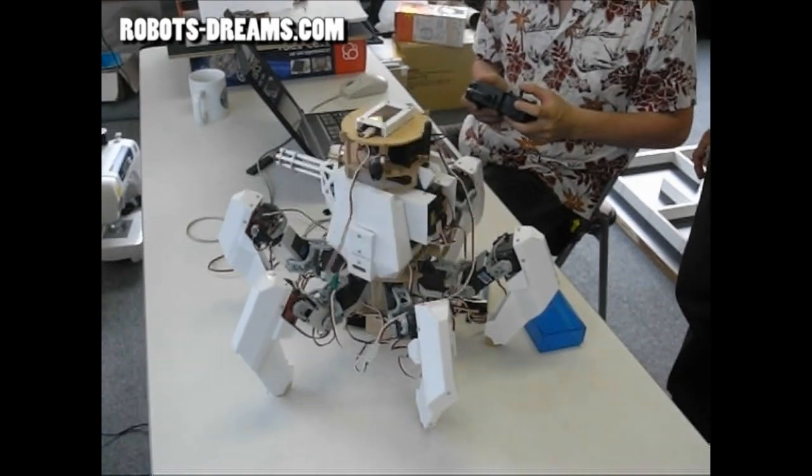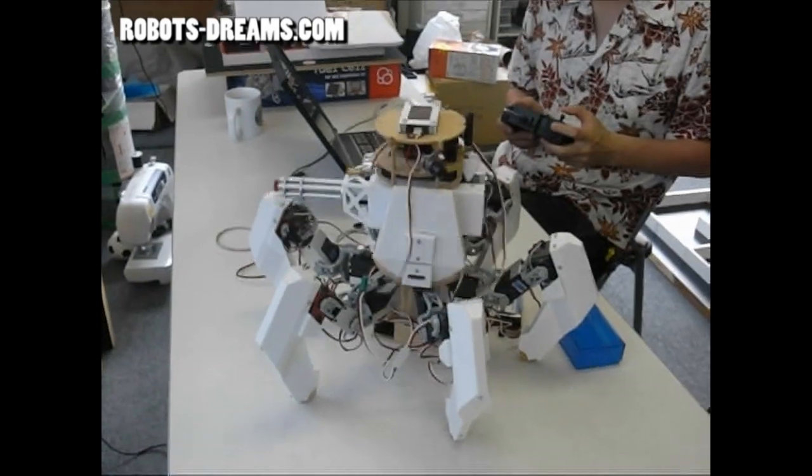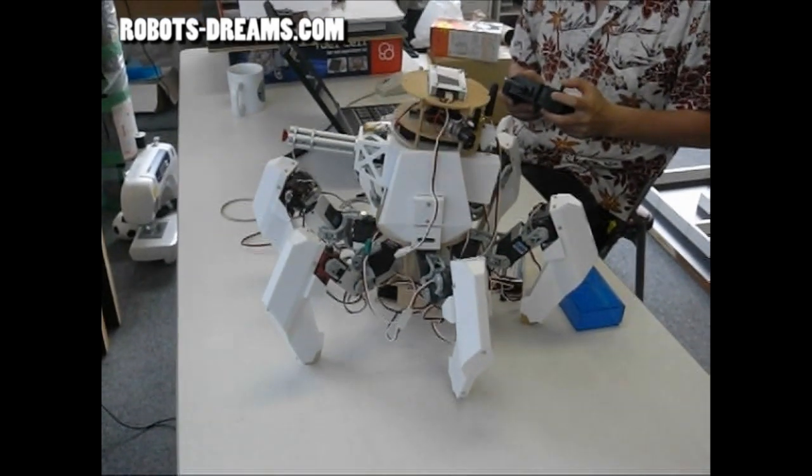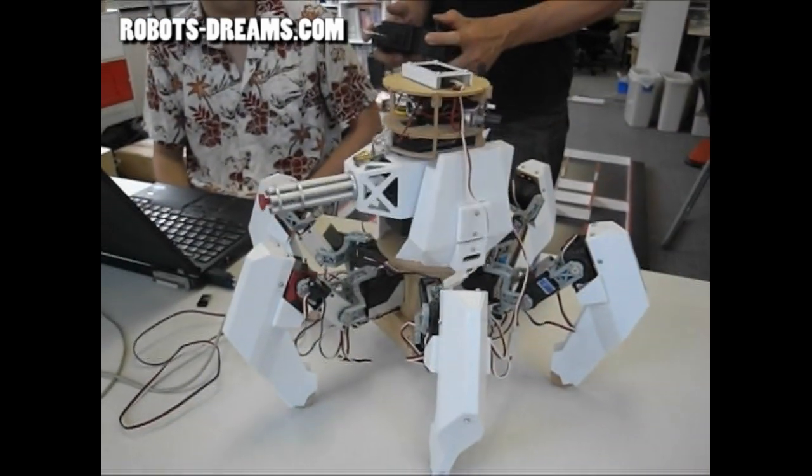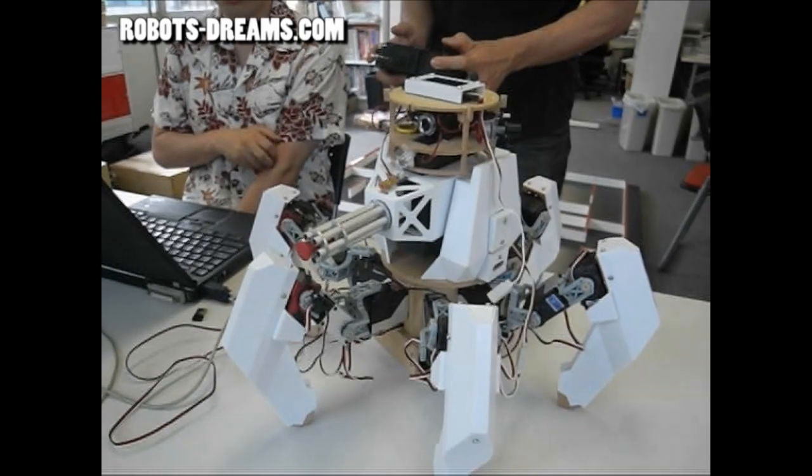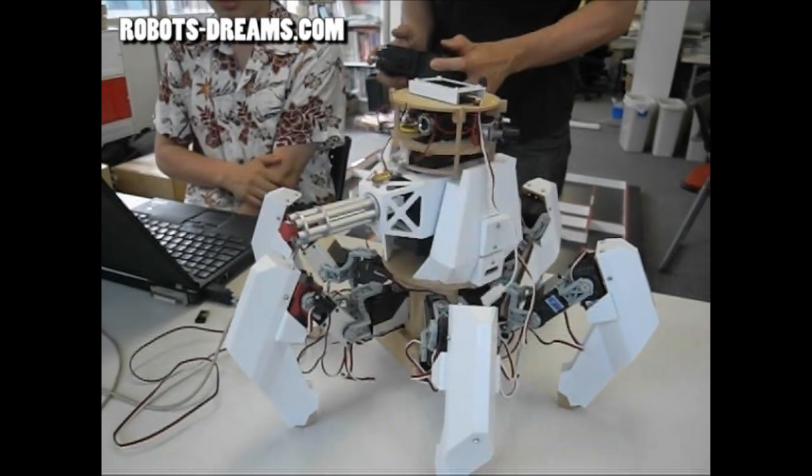The only problem that we've noticed so far is that the gun turret sometimes collides with the top joint of the front legs. It'd be interesting to see if it's possible to develop a software algorithm so that the operator could just point the gun turret towards the opponent, and let the controller take care of moving the legs and pan and tilt to get the gun into position.